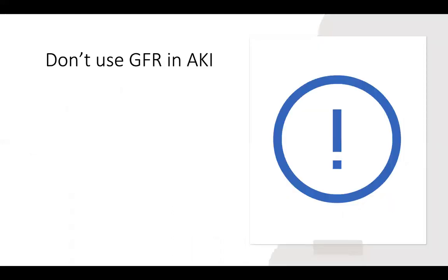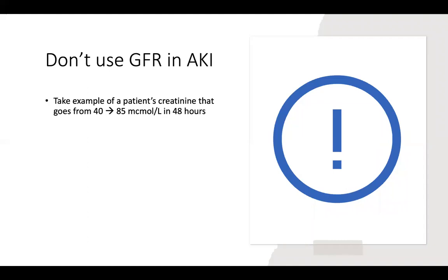GFR is a term used to discuss patients with steady-state creatinine values. In acute kidney injury, GFR is not an accurate portrayal of kidney function. In nephrology, we prefer not to talk about GFR when discussing AKI — we use the creatinine. For example, if a patient has a baseline creatinine of 40 and it goes up to 85, that's a doubling, showing significant decline — but their estimated GFR would remain basically in the normal range.